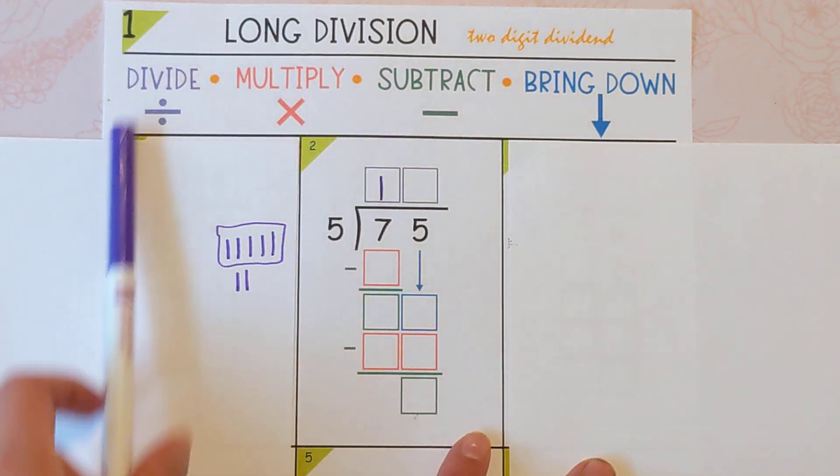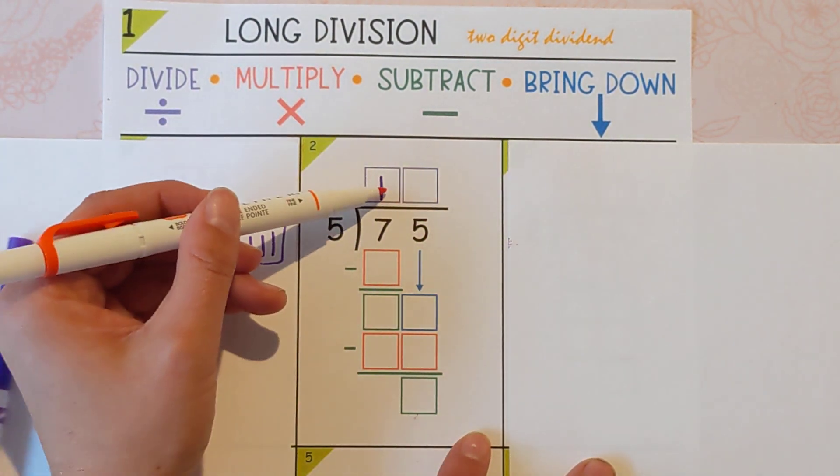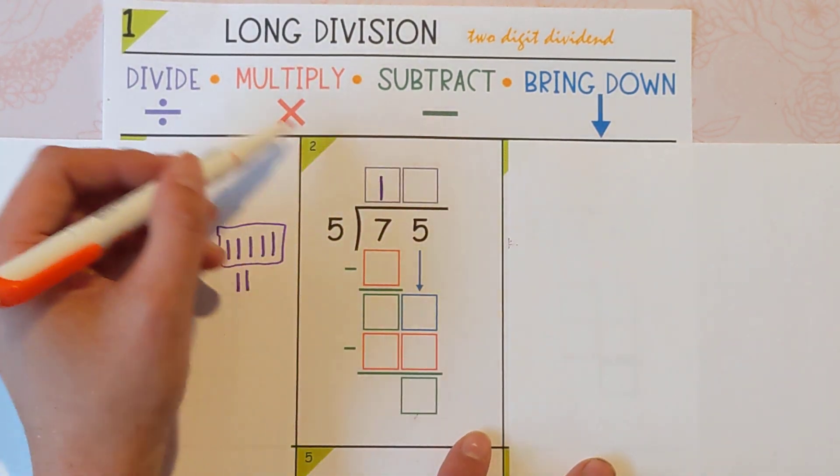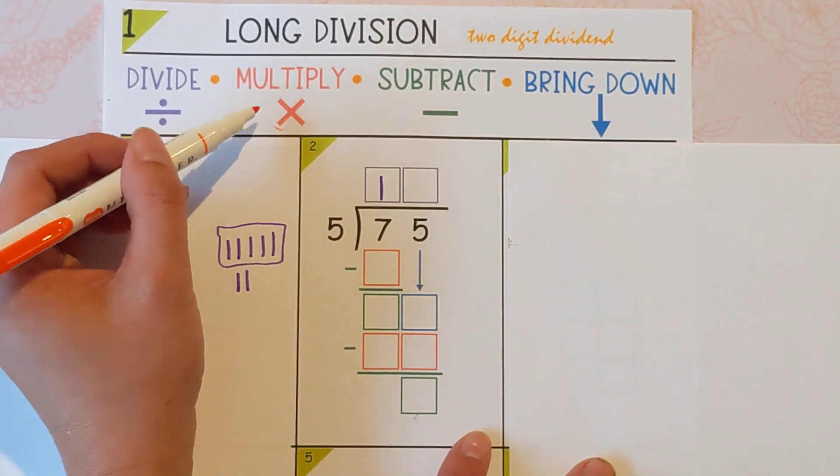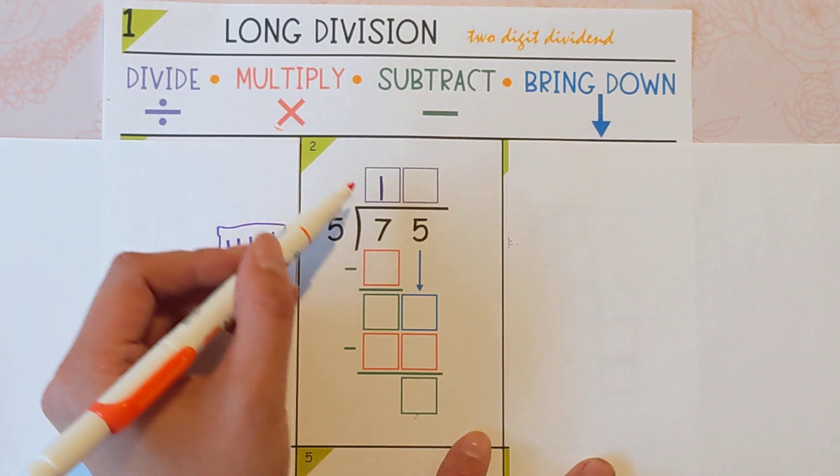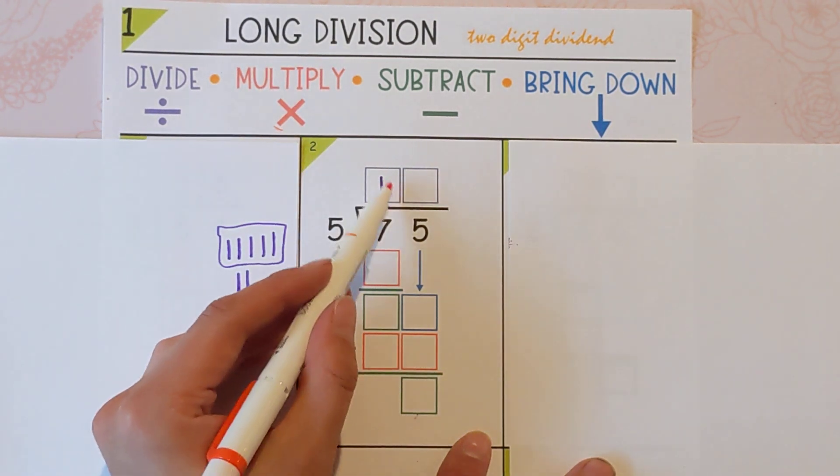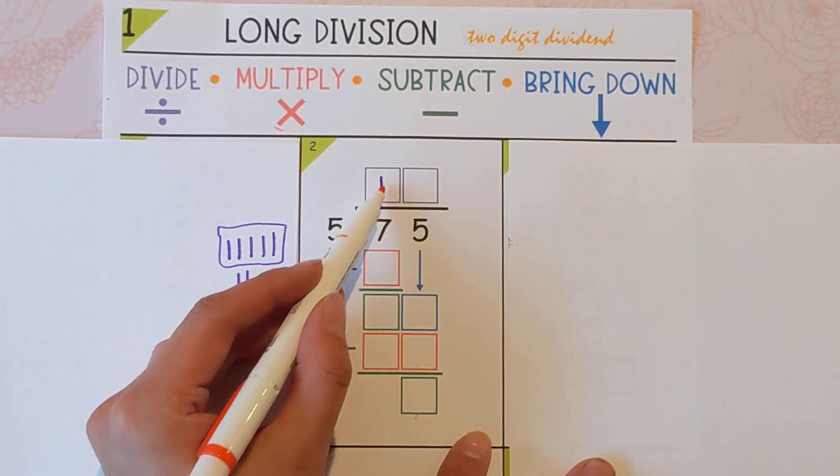But 5 can go into 7 one time, so we're going to put the 1 up there. Now the next step is to multiply that 1 back just to see how close we got to the 7. So we're multiplying. A good thing to remember is you're usually just working with the last thing you touched. So if you're thinking oh wait, what am I multiplying, what am I subtracting? Think about the last thing you wrote. In this case it was the 1.